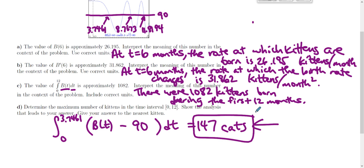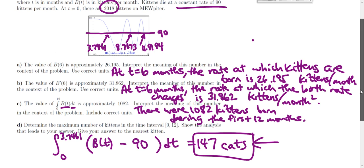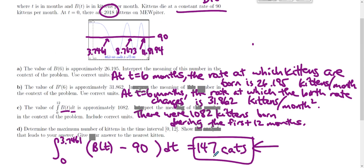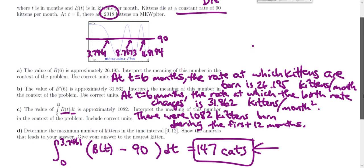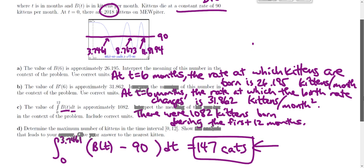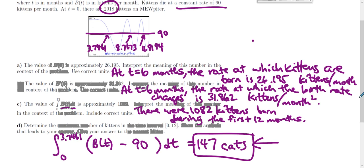We would show all three integrals for full credit, but this first one generates the maximum number of kittens. That's your 15 minutes — office hours will help clear up any remaining questions.